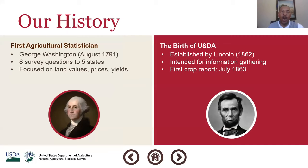I wanted to highlight two former presidents. President Washington was the first statistician — he actually surveyed some of the local states to get information on land values, prices, and yield. And we're very partial to President Lincoln for his vision to establish the Department of Agriculture in 1862 for the purpose of information gathering — the very thing that we exist for. Our first crop production report was released the following year in July of 1863.